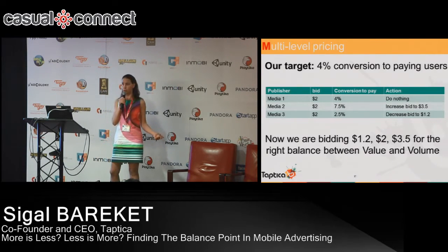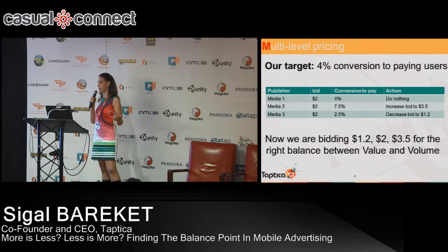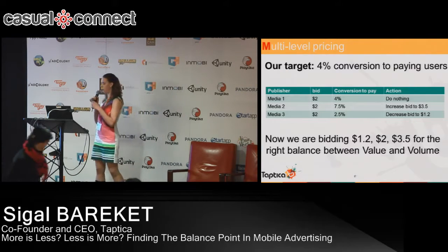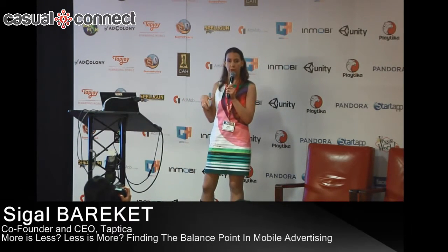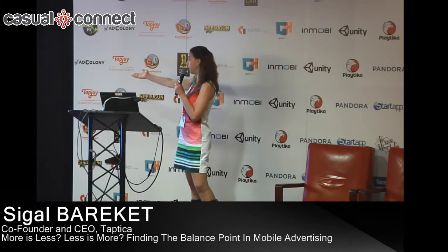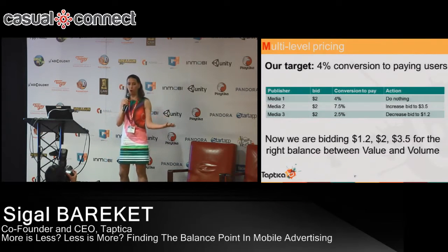In the first week of your campaign, you're bidding $2 across the board for all media sources. For media number one, you bid $2 and got 4% — everything is great, no need to change anything. For media number two, you bid $2 and got 7.5%, almost double your target. It makes sense to pay much more for this media source, so you increase the bid to $3.50. For media number three, you bid $2 and got only 2.5% engaged users — lower than your target. But it's not that bad if we change the bid; now we're bidding $1.20 instead.